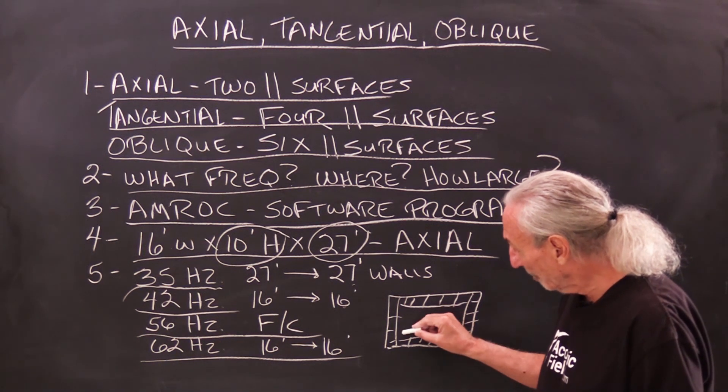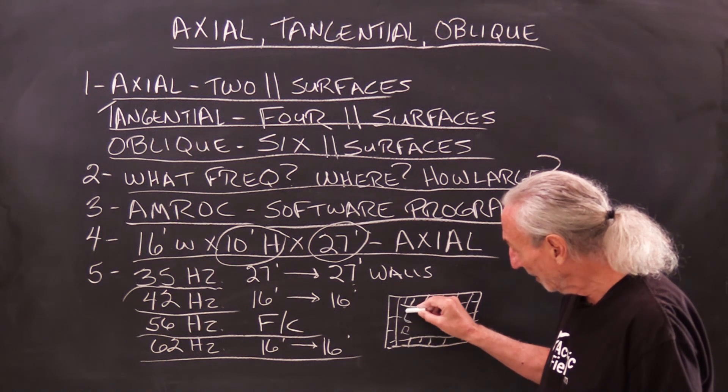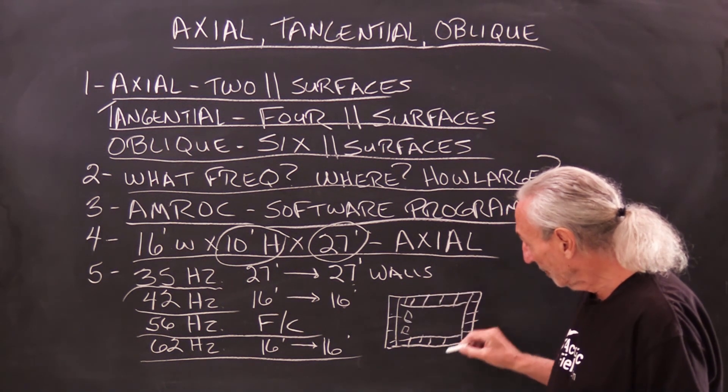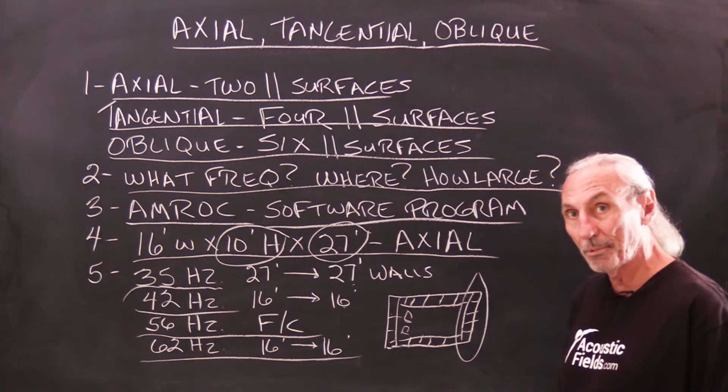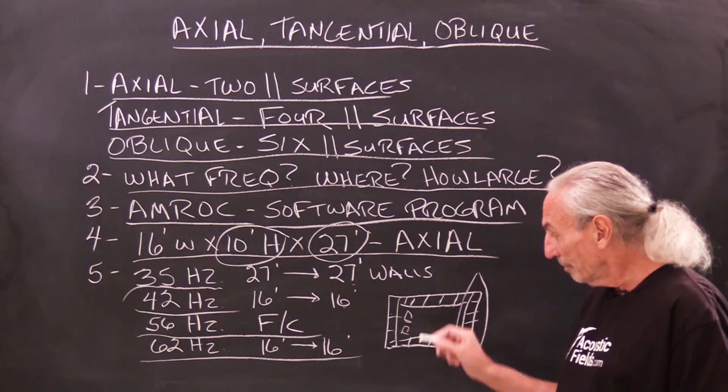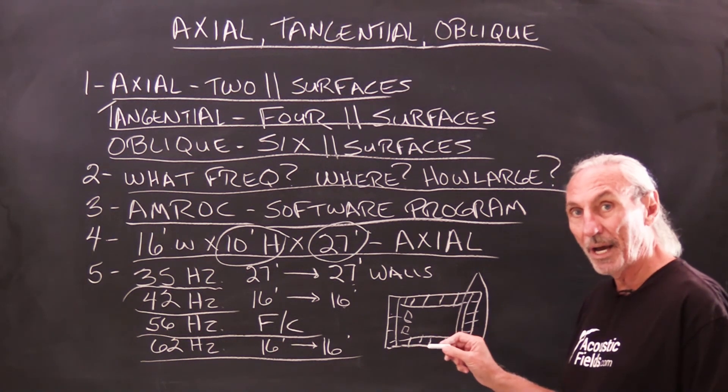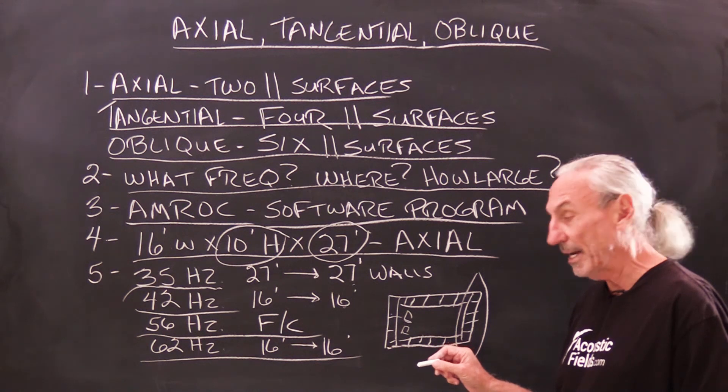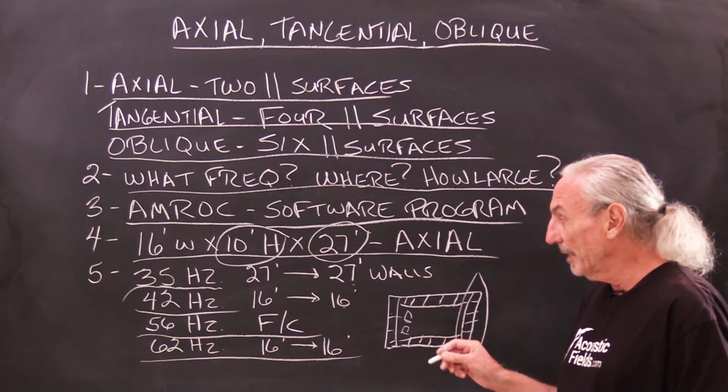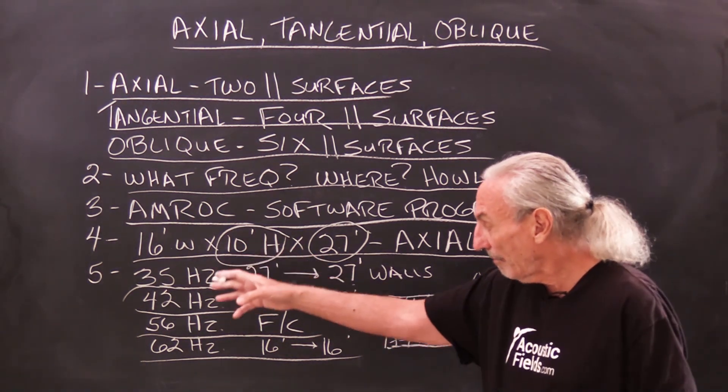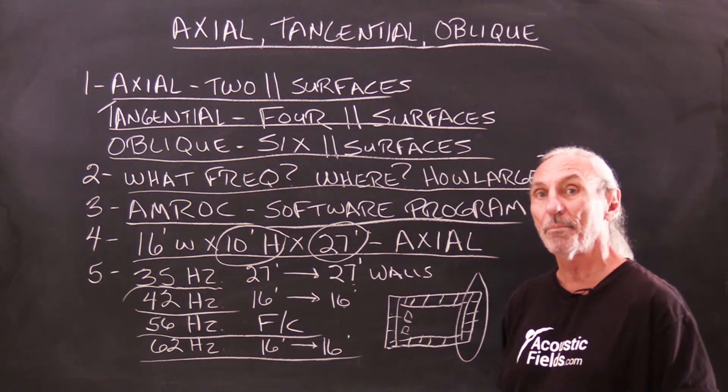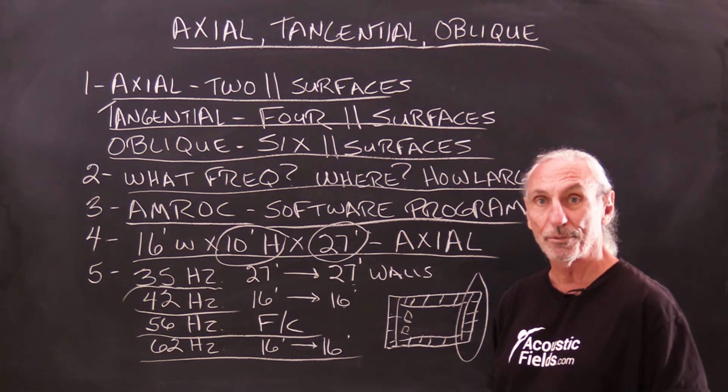So in certain rooms, like two channel listening rooms or mix rooms, we can get away with the front and two side walls, and we can forget about the rear. So there's ways we can conserve some dollars and help our budget out and get maximum performance. But in an ideal world, if we have all these surface areas that are causing the problem, we have to treat those surface areas.